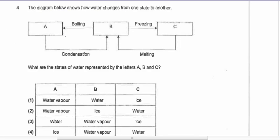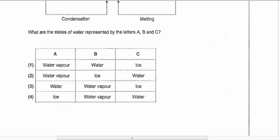Question four: the diagram shows how water changes from one state to another. Boiling is liquid to gas, condensation is gas to liquid. Freezing turns liquid to solid, and melting turns solid back to liquid. Based on your understanding of states of matter, what ABC represents is very obvious — the answer is one.